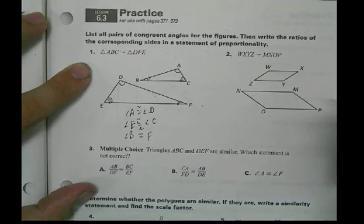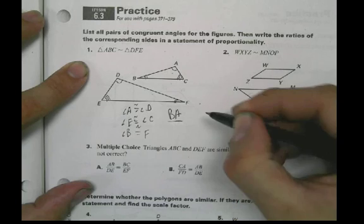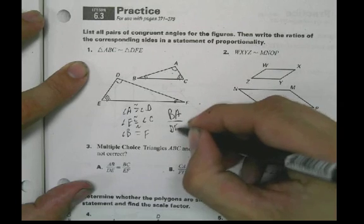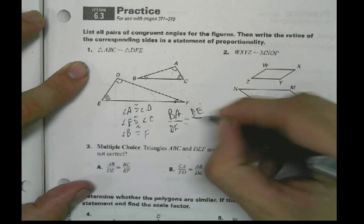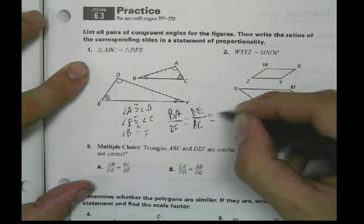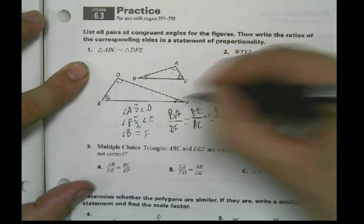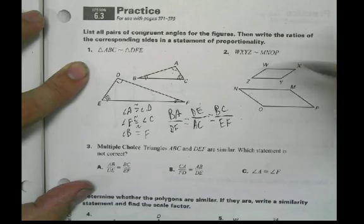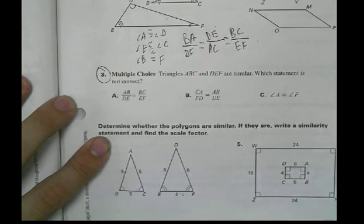We can say some more stuff. We could say that BA divided by DF equals DE divided by AC, which equals BC divided by EF. Check out where they're coming from and do the second one.